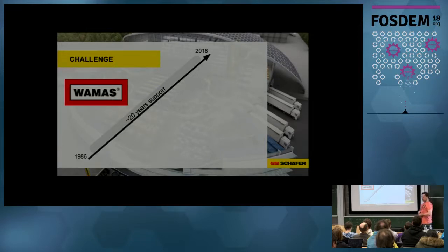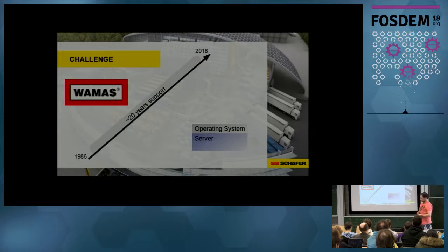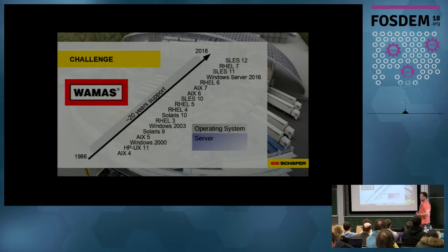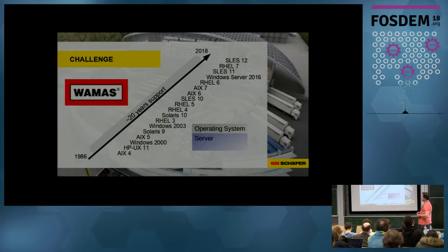This is true for the software as well. Because of being software, it needs an operating system to run on, which of course needs a server. The challenge is: which operating system would you choose where you can provide 20 years of support? Within 20 years of software — and I have been working for a little more than 20 years already at SSE Schaefer — I have seen lots of different operating systems. Some may remember things like HP UNIX, AIX 4, 5; AIX is still active with AIX 7.